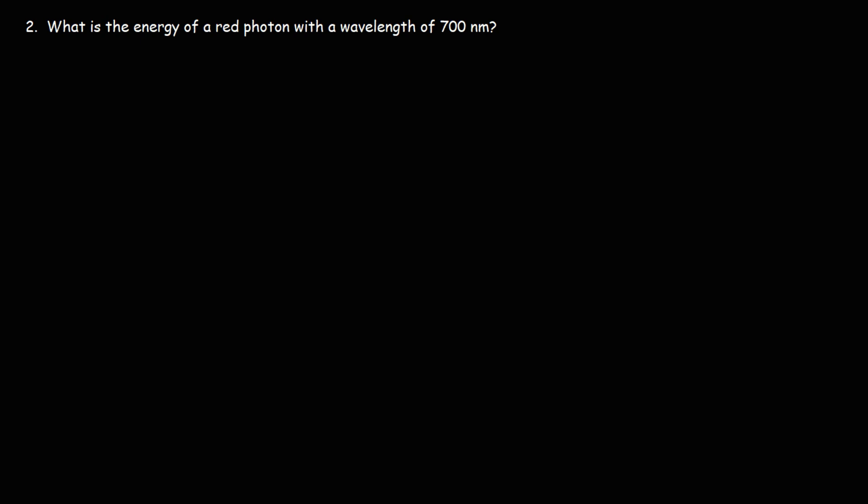Now, in order to do this one, we need an additional formula. The wavelength of light times frequency is equal to the speed of light. So what we need to do first is we need to calculate the frequency. The frequency is the speed of light divided by the wavelength.